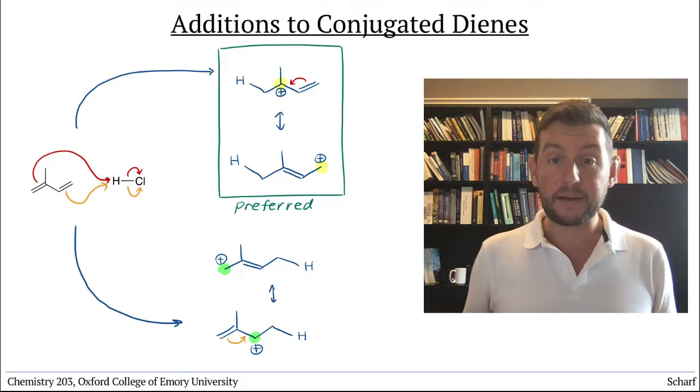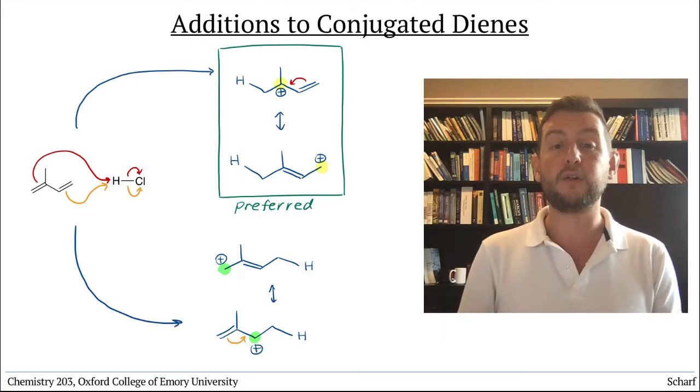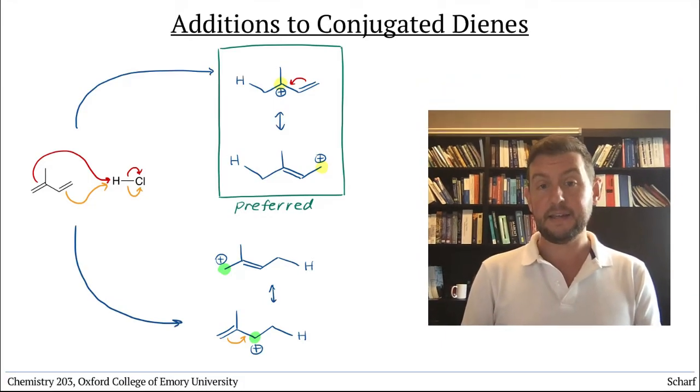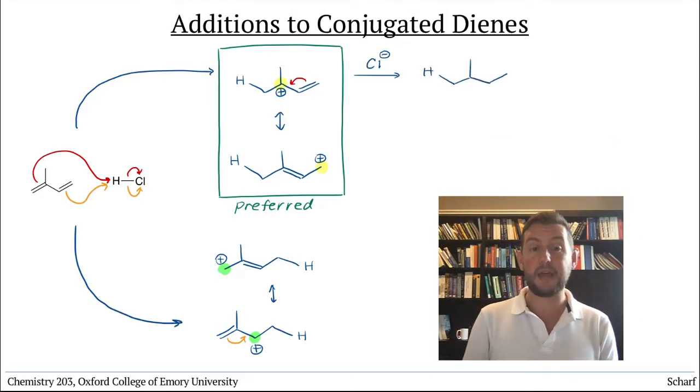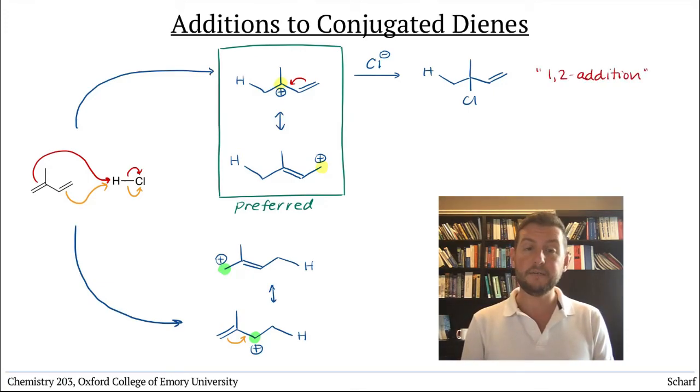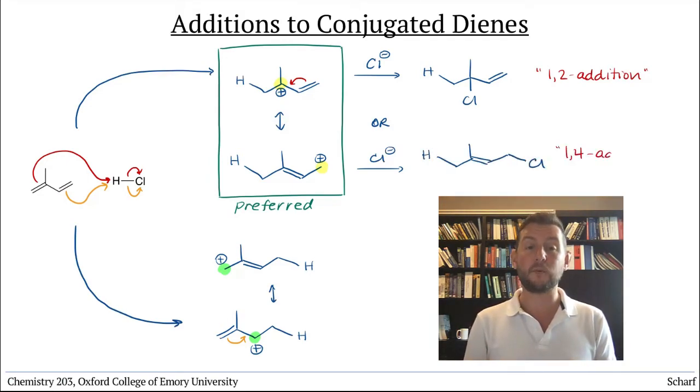But even that compound can give two possible products, depending on where the chloride attacks. If the chloride attacks here, adjacent to where the H added, we call this 1-2 addition. But if the chloride attacks here, at the other end, we call this 1-4 addition.